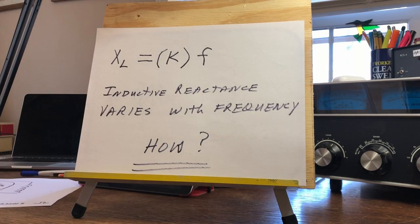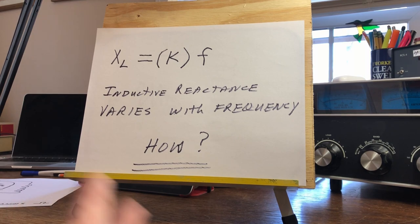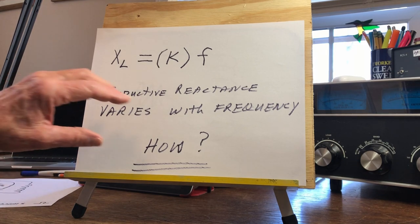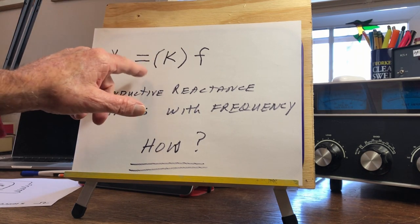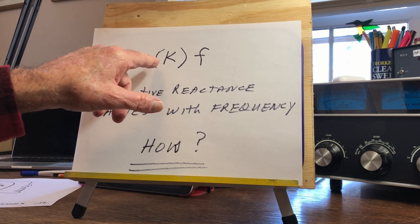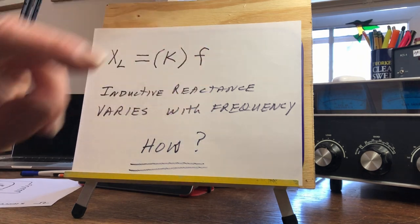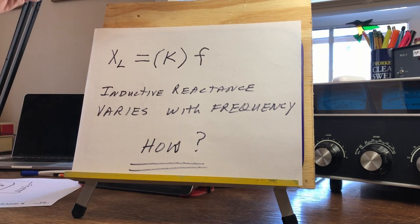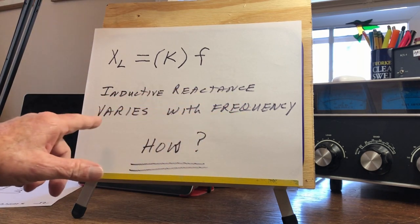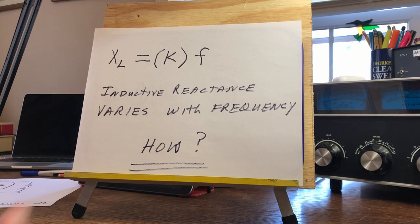What is X sub L, this inductive reactance? You probably learned the formula 2πFL when you passed your license test. X sub L equals 2π times L times the frequency. So as the frequency goes up, X sub L gets bigger — inductive reactance varies with frequency. But how and why does that happen?